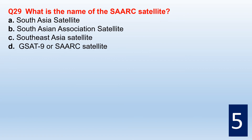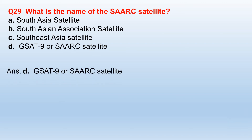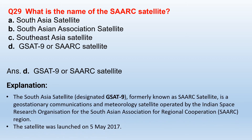What is the name of the SAARC Satellite? The correct option is option D — G-SAT-9, also known as the SAARC Satellite. The South Asia Satellite, designated G-SAT-9 and formally known as SAARC Satellite, is a geostationary communications and meteorology satellite operated by the Indian Space Research Organization for the South Asian Association for Regional Cooperation. The satellite was launched on 5th May 2017.